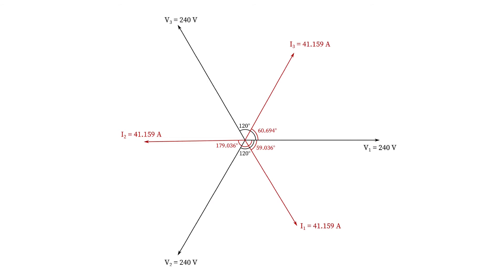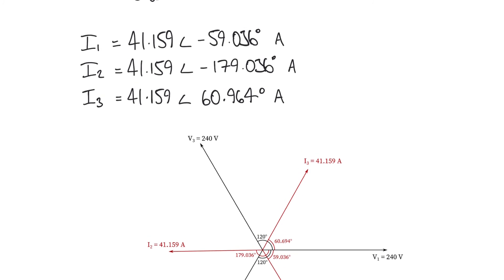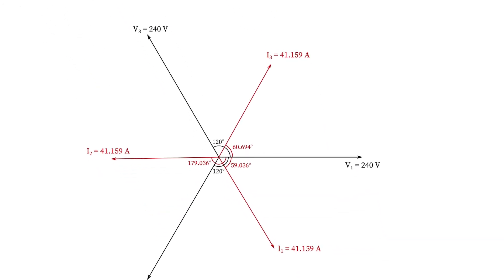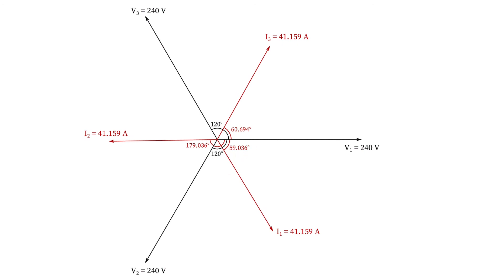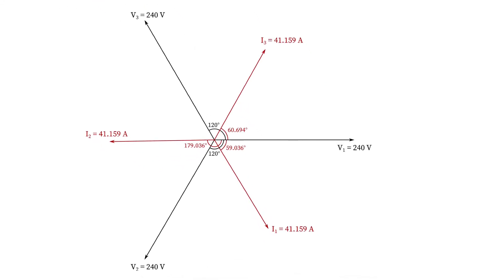A quick note on phasor diagrams: the default zero degrees angle points to the right, which is our starting position. A positive angle tilts upwards from that point and a negative angle tilts downwards. For example, V1 was at zero degrees so it points to the right. I1 at minus 59 degrees tilts downwards by 59 degrees. I3 at plus 60.964 degrees tilts upwards from the horizontal by that amount. The same applies to all the other currents and voltages plotted on the diagram.